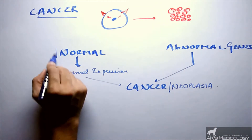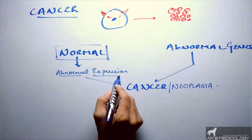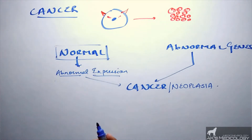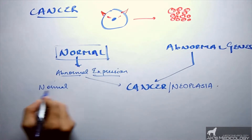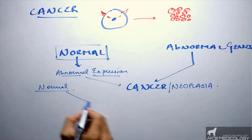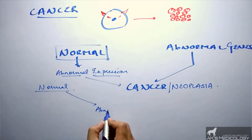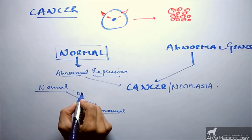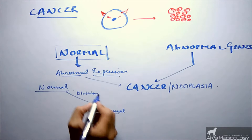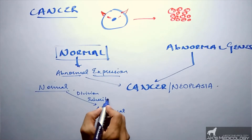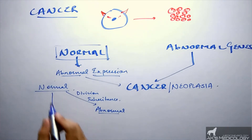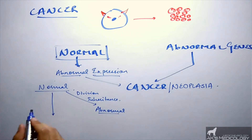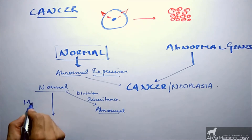What happens in these normal cells which causes such abnormal expression is a topic of concern. Normal genes may convert into abnormal genes during cell division, during inheritance, or through the most common method — mutation.